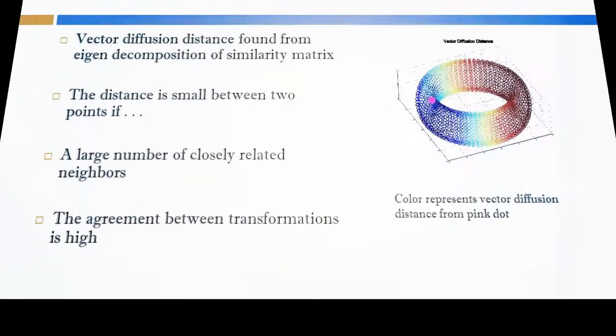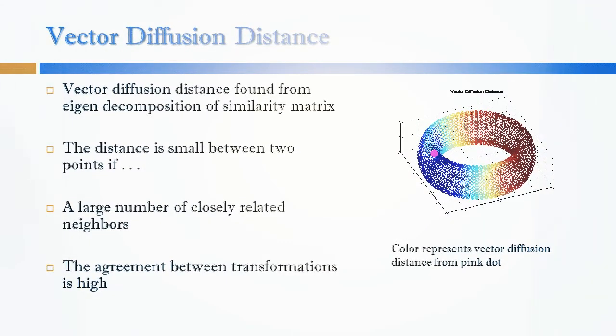Just as with the diffusion distance, the vector diffusion distance will be small between two points if there is a large number of closely related neighbors. However, this distance also depends on the agreement between transformations.